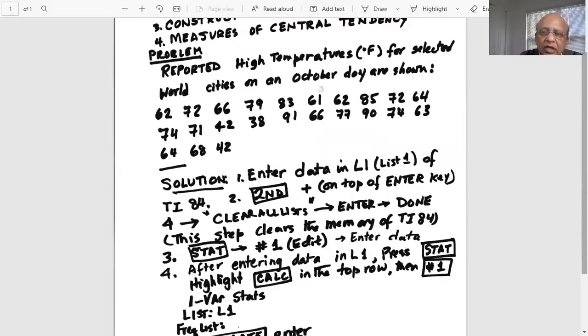So we will enter the first number 62, and then hit the enter button at the right corner, bottom corner of the calculator. Then 62, 72, 66, 79, 83, 61, 62, 85, 72, 64, 74, 71, 42, 38, 91, 66, 72.